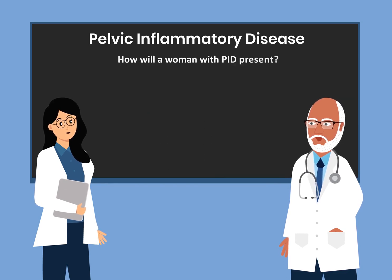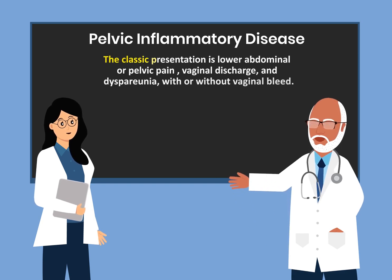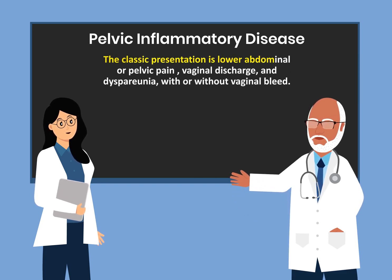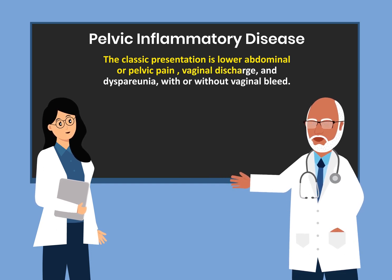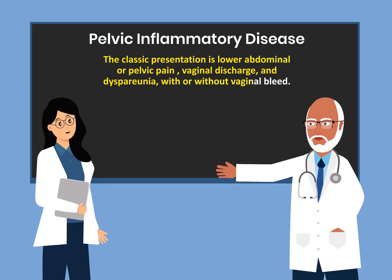How will a woman with PID present? The classic presentation is lower abdominal or pelvic pain, vaginal discharge, and dyspareunia, which is painful sex, with or without vaginal bleeding.